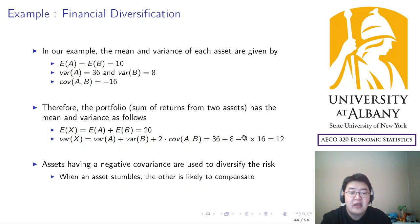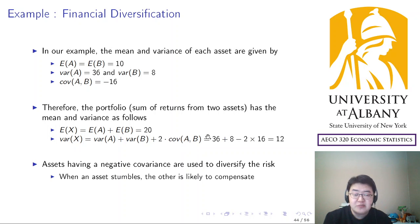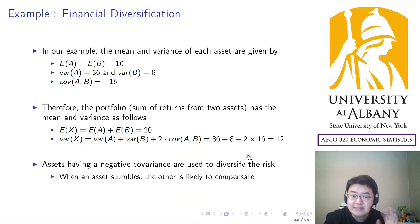It's clearly seen that if there was no covariance, the variance of the portfolio would simply be the sum of the variances. However, because the covariance was negative, the resulting variance is much smaller than that sum. If the covariance were positive — meaning they move together — the variance would be larger than the sum of the variances.